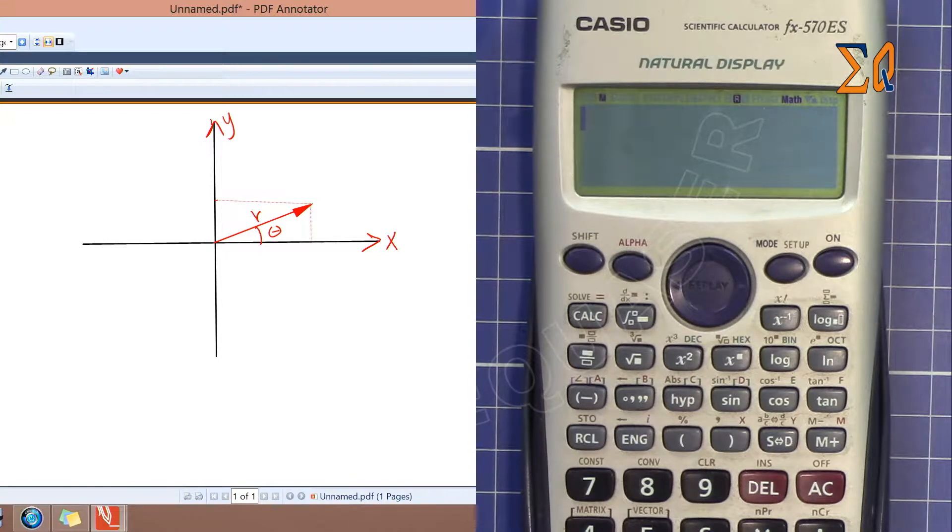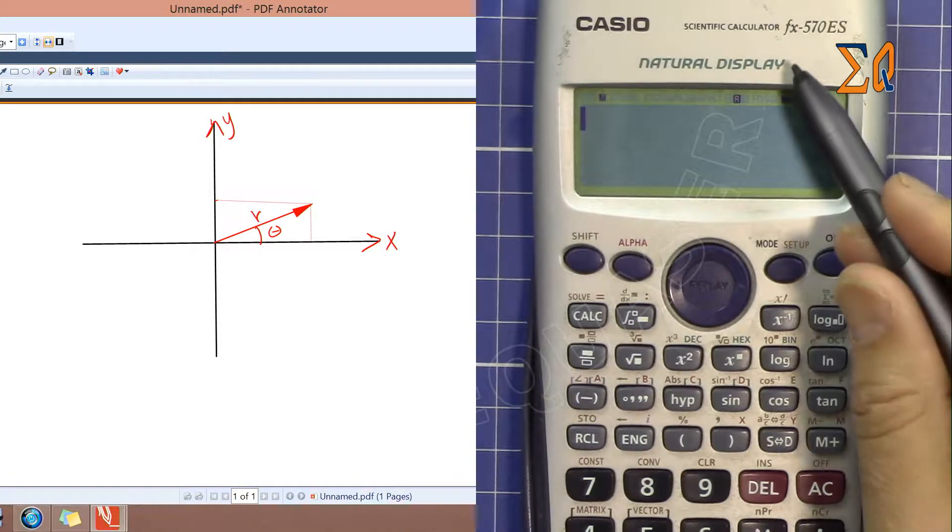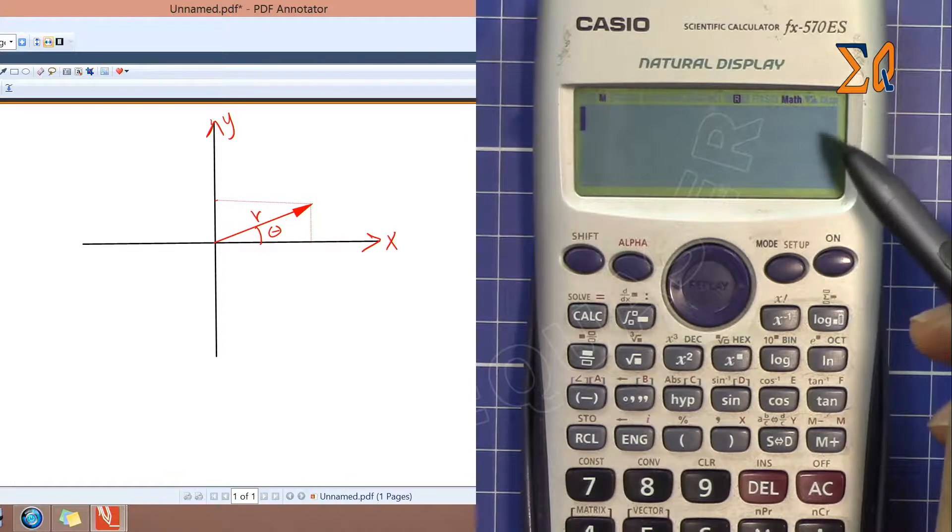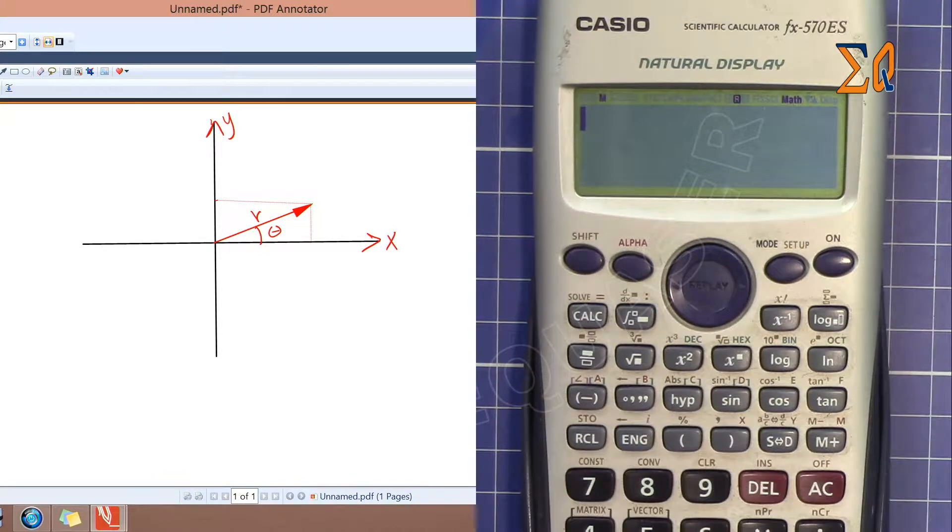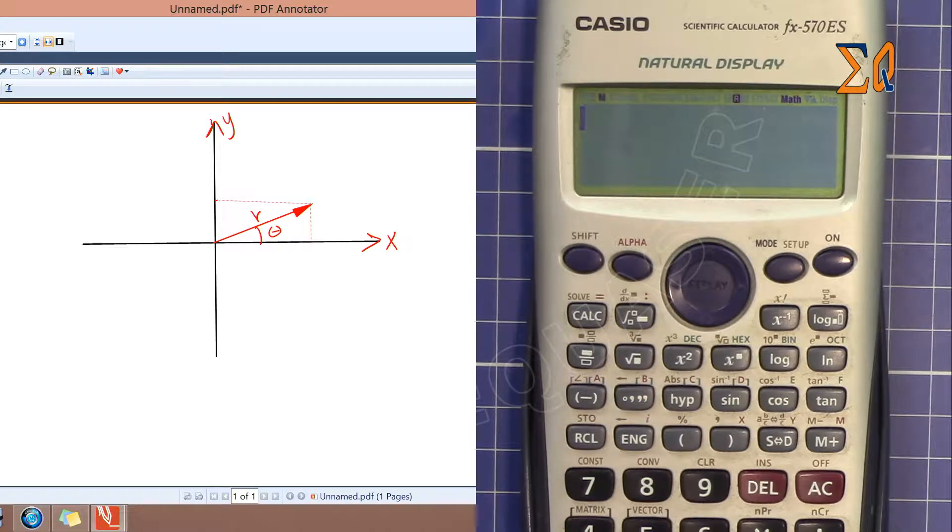Hi, welcome to Equasor. In this video I'm going to use Casio FX570AS calculator to do polar and rectangular conversion. Rectangular is also called Cartesian, so let's have a look here. As you can see on the screen on the